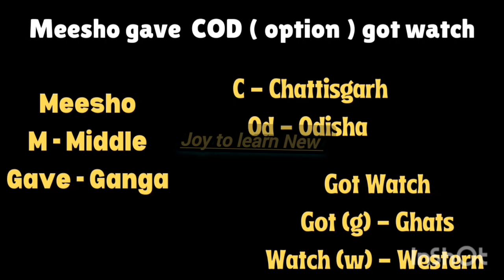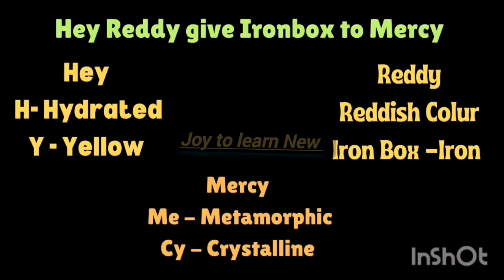The third shortcut is: 'Hey Reddy, give iron box to Mercy.' Here H-E-Y — H represents hydrated, Y represents yellow. That is, the soil looks yellow in color when it occurs in a hydrated form.